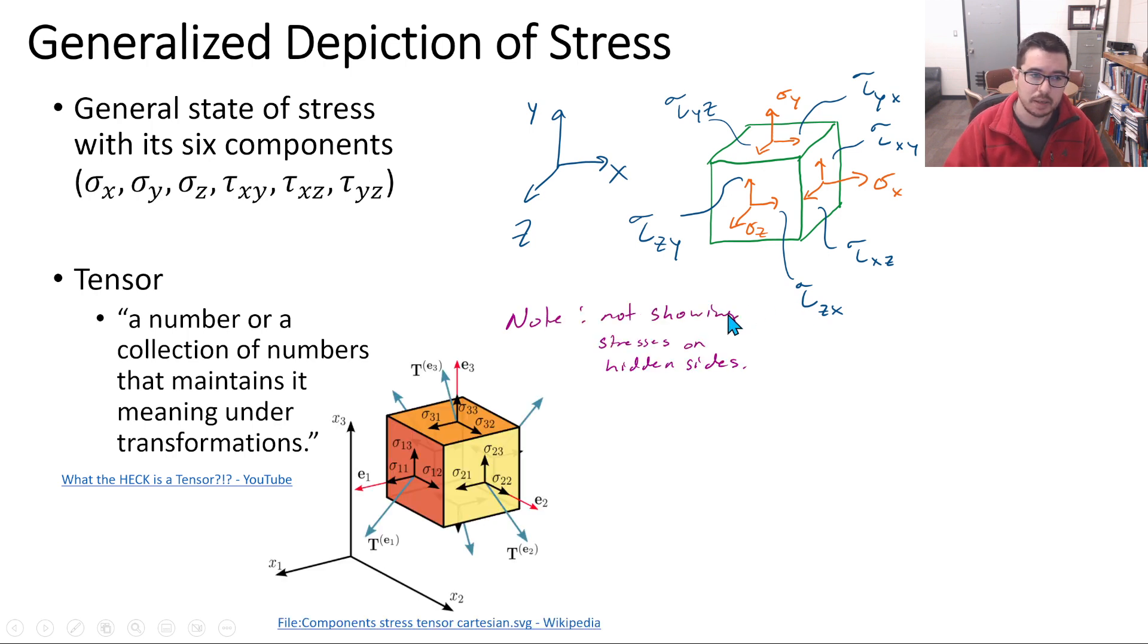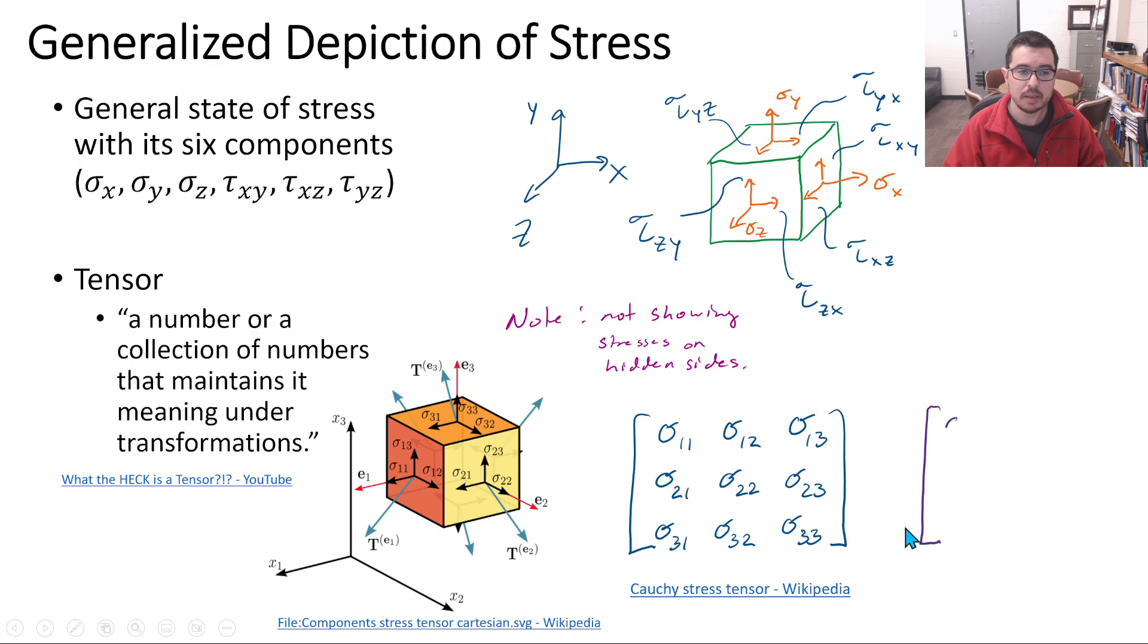We also recall that we can represent the state of stress on the material element in terms of a tensor, the Cauchy stress tensor. Often you'll see it written out as sigma x, tau xy, tau xz, tau yx, tau yz, tau zx, tau zy, sigma z. So these six elements spread in this tensor appropriately. That's the general depiction of stress on the material element in 3D.